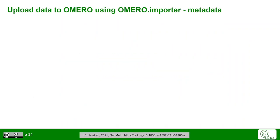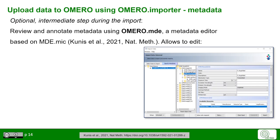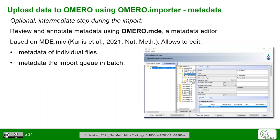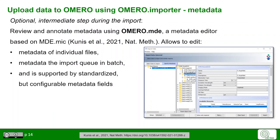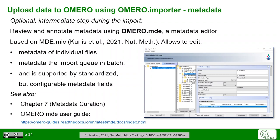Let's have a look at the metadata again. If we use the optional intermediate step during the import — Omero MDE — we can call up different metadata fields according to specific metadata formats and schemes. Please review the original paper on this, shown at the bottom of the page. Here we can edit the metadata of individual files or of the whole import queue in batch. This supports standardized, configurable metadata fields and even ontology call-up. We will go into more detail on metadata curation in later chapters.